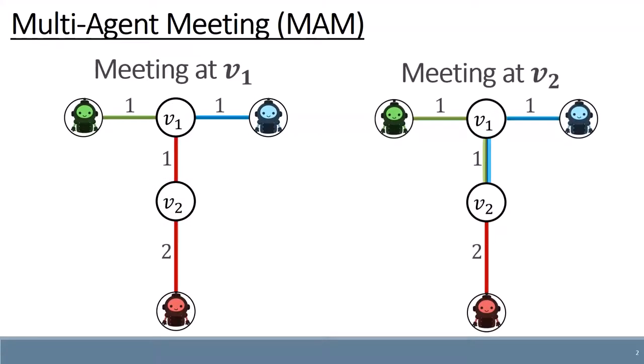On the left side, the agents meet at location v1, and on the right side, the agents meet at location v2.